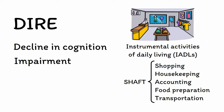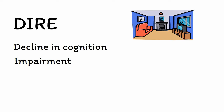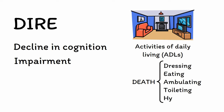As dementia progresses, impairment is seen in even more fundamental areas known as activities of daily living, or ADLs, which are basic self-care tasks that a person must do in order to survive. These can be remembered using the acronym DEATH, which stands for dressing, eating, ambulating, toileting, and hygiene. Use the DEATH SHAFT mnemonic to memorize the ADLs and IADLs as these will give you a structured way of assessing functional impairment in clinical settings.